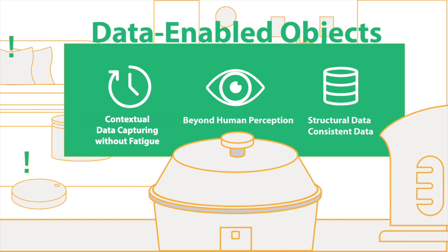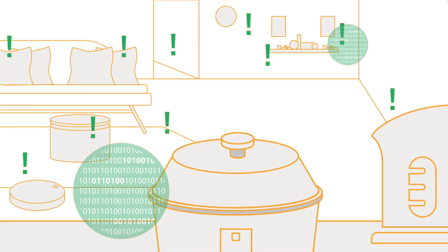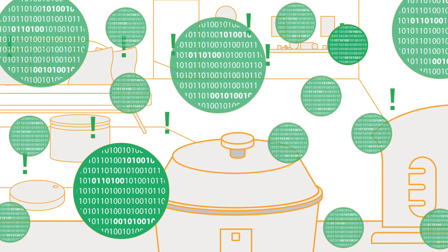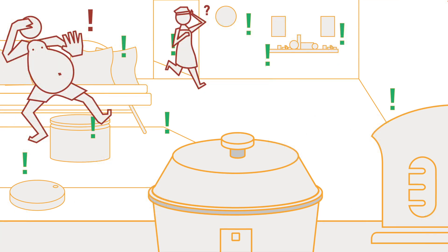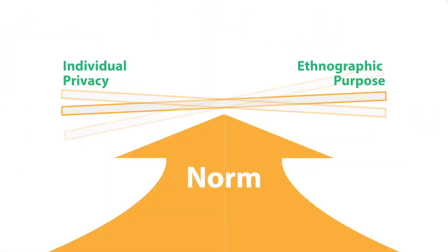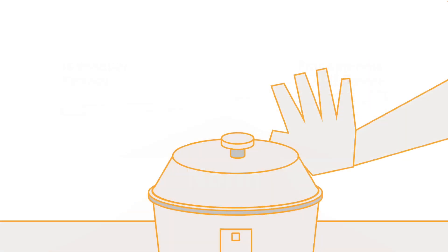However, Data-Enabled Objects are still computational devices. Unless explicitly programmed, they cannot adapt their data collection mechanisms to react to different situations. They can be insensitive and raise privacy concerns from participants. While researchers may provide information letters and consent forms, these may oversimplify privacy requirements — which are not just a yes-or-no question, but are context-dependent and hidden in our social norms. As a result, design researchers can face a dilemma in employing Data-Enabled Objects.